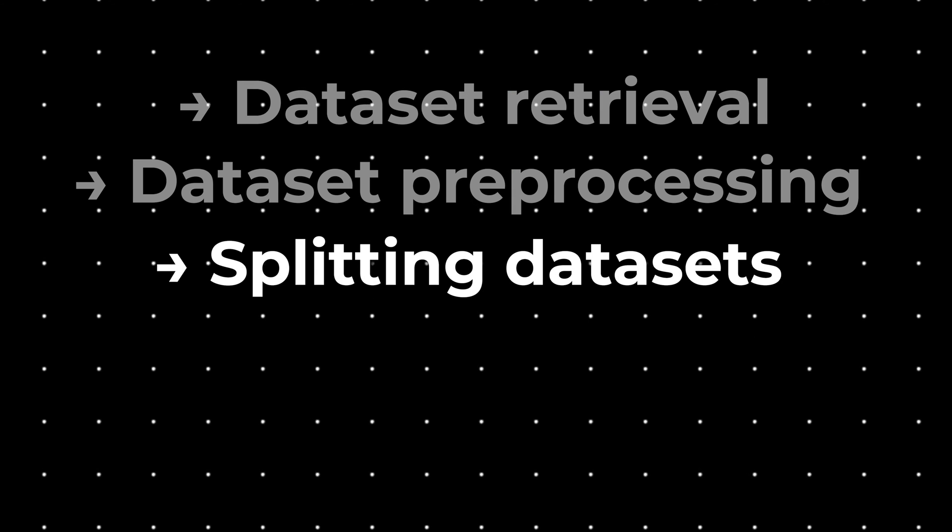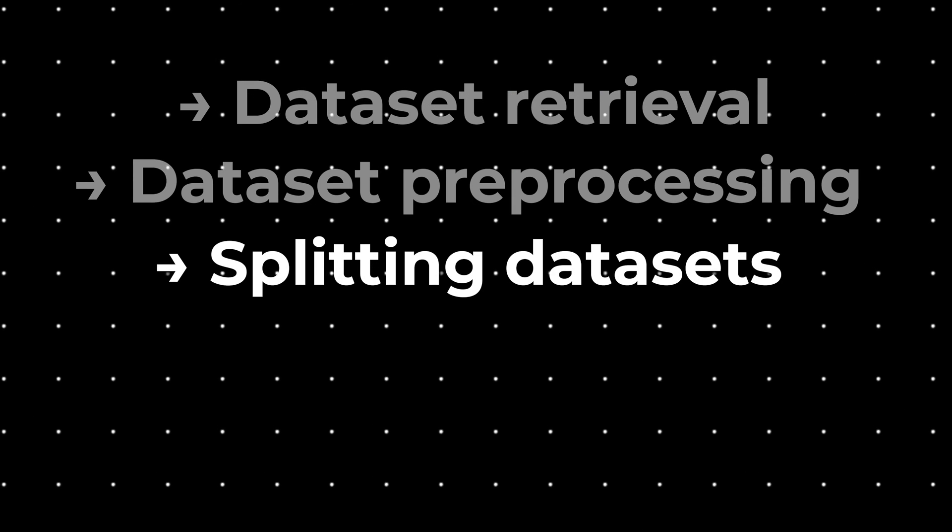Next comes the stage of splitting datasets. The program splits the data into training and validation subsets. We use the validation subset to evaluate how well a machine learning model generalizes after being trained on the training subset. This allows us to judge whether the model improves after each training cycle.